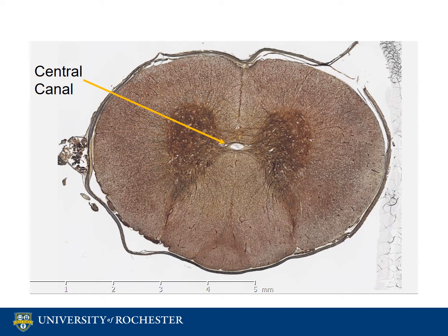The remaining tissue that isn't gray matter is white matter. It gets its name because when it is not stained, it appears white because of the abundance of myelin it contains. The stain used on this sample was a silver stain. White matter transmits signals and is comprised mostly of glial cells and axons.